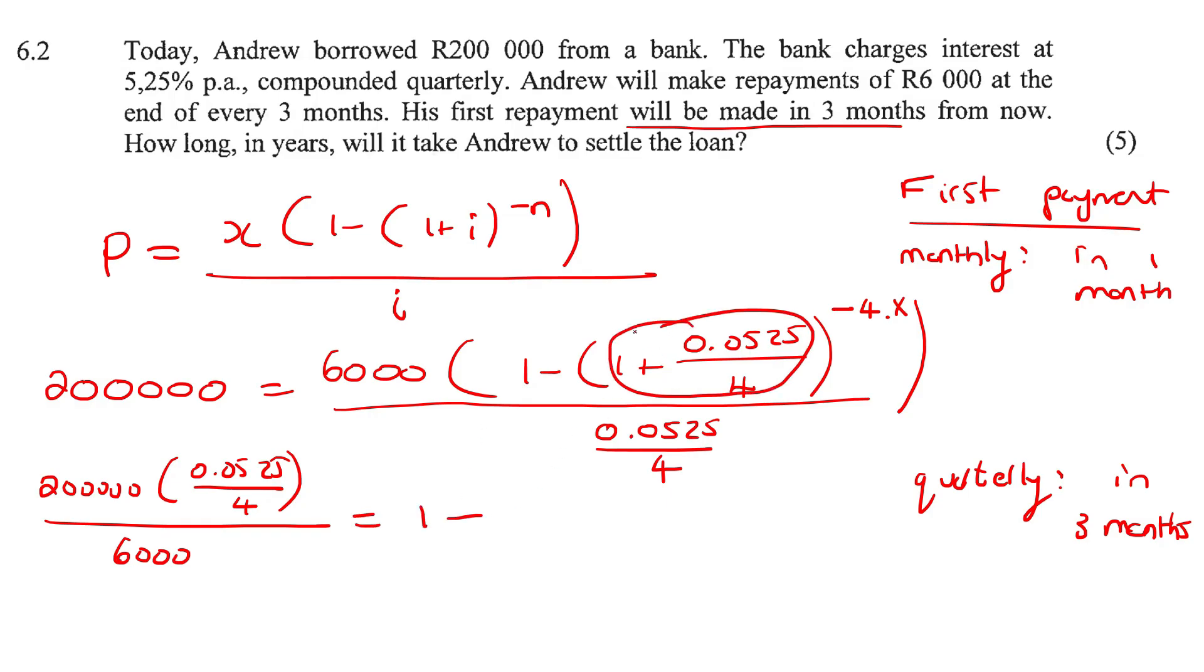And that'll give you 1621 over 1,600 to the power of negative four X. We can keep it in a bracket like that.